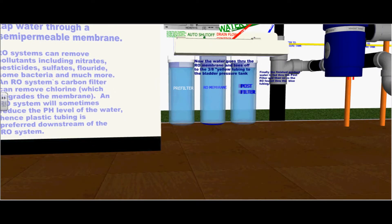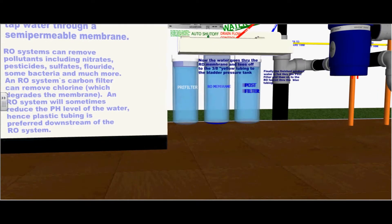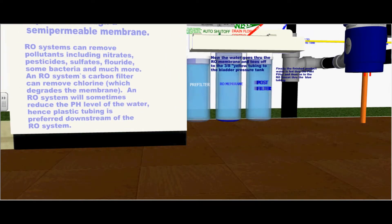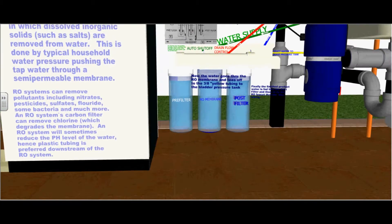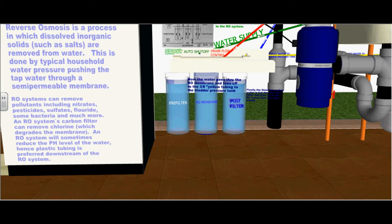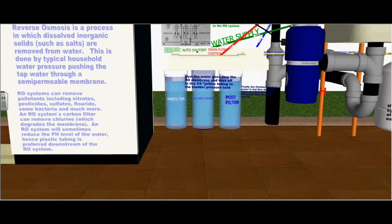RO systems can remove pollutants including nitrates, pesticides, sulfates, fluoride, some bacteria, and much more. An RO system's carbon filter, which is the first pre-filter, can remove chlorine which degrades the membrane, the middle filter.